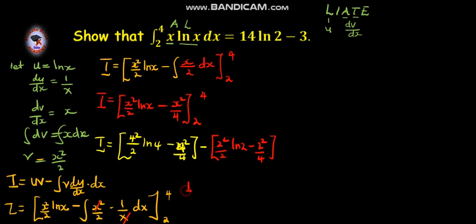So, I is equal to 16 divided by 2, that is 8, ln 4, minus 4, then minus 2, ln 2, minus 1.